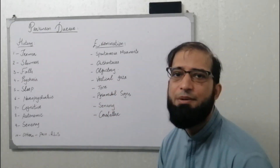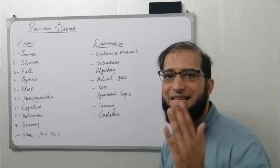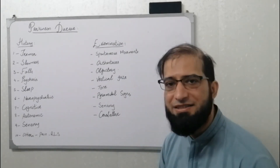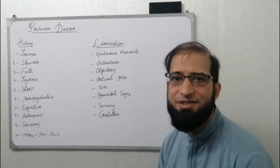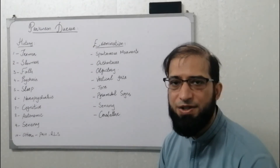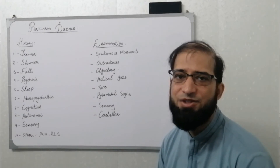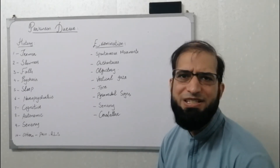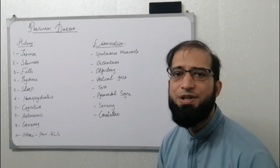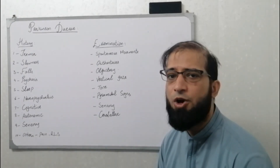Orthostasis should be assessed for autonomic dysfunction by checking blood pressure in the lying position after five minutes, then immediately on standing, and again after three minutes. This is a crude but useful bedside test. A screening ECG can also indicate whether sinus arrhythmia is present, and more sensitive autonomic function testing can be done as needed.